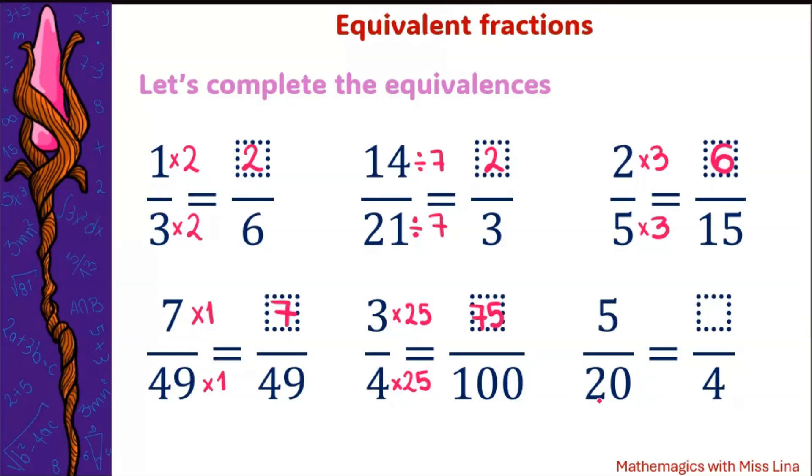And finally from 20 to 4 we would have to do a division. 20 divided by 5 is 4. 5 divided by 5 is 1. Excellent. 5 over 20 is equivalent to 1 fourth.